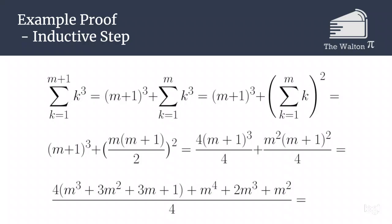If we then use our inductive hypothesis, we can replace that sum of k cubed with the sum from k equals 1 to m of k squared. So we now have m plus 1 cubed plus the sum from k equals 1 to m of k squared.